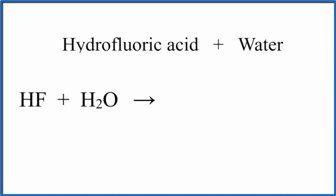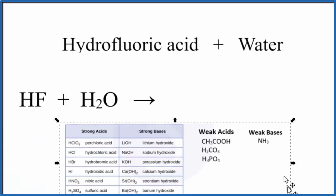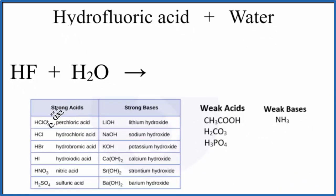And really the only way for you to know that is to have memorized the strong acids. So here's a table with the strong acids. And we don't see HF on the list of strong acids. We see HCl, HBr, and HI, but not HF.